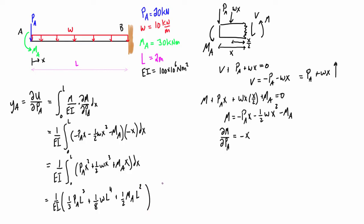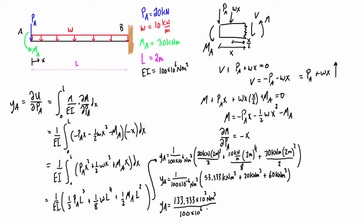All right, now let's plug in everything that we have. So we have EI, we have Pa, we have w, L, and mA, and we can reduce this a little bit. And if you just do that final calculation in your calculator, you're going to get 0.00133 meters, and you can convert that to basically 1.33 millimeters, and that is the deflection yA.